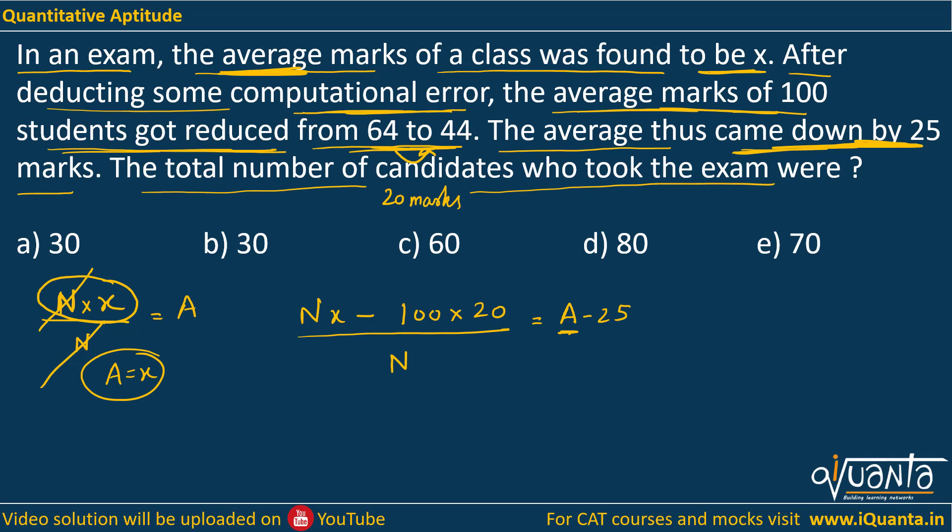So if I put x in place of this A and if I further solve this equation: Nx minus 2000 equals to Nx minus 25N. Nx and Nx cancels, I get the value of N equals to 80.